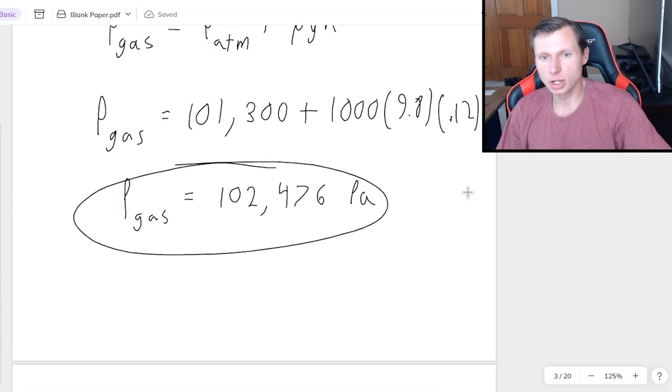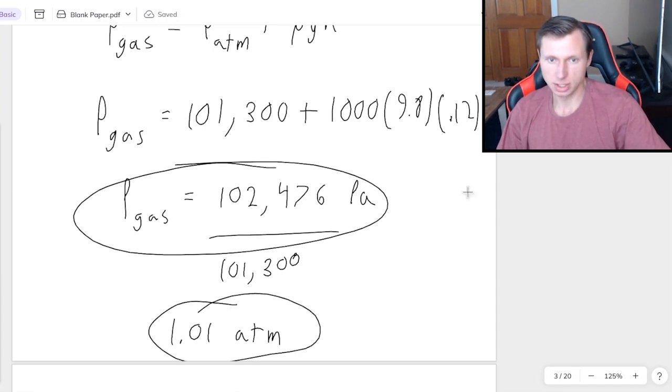And by the way, if you wanted to know what the answer is in ATMs, that's very easy. You just have to divide this by the conversion factor, which is 101,300, and that'll get us 1.01 ATMs of pressure. So just slightly higher than what we normally experience every day when we go outside.